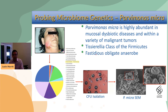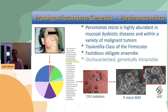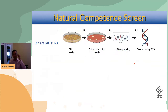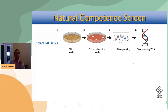These are fastidious obligate anaerobes, very challenging to grow and definitely challenging to isolate from mixed patient samples. Not surprisingly, they are basically uncharacterized and assumed to be genetically intractable. To test for natural competence, we have a system that works as follows.